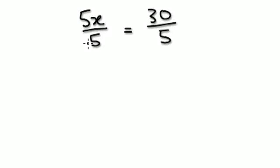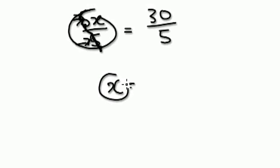This side, because the two 5s are identical, they basically kill off each other, leaving you x. This side becomes x. This side here, 30 divided by 5 is 6.